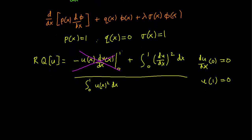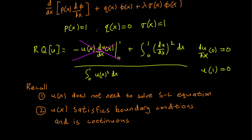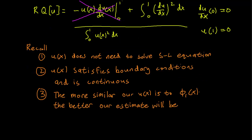We need to figure out what the u are. Remember, the whole point of the minimization principle is that u does not need to solve the Sturm-Liouville equation. But u does satisfy the boundary conditions and we also insist that u is continuous. This is something we did not mention, but it's also important.